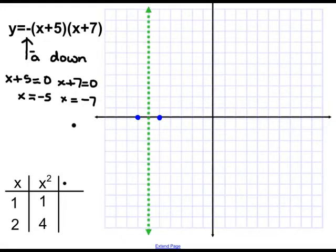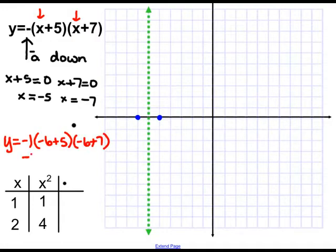Now, once we have done that, then what we would do is we would take that value and plug it back into our equation everywhere we see an x. So we're going to put a negative 6 in. So y is going to be equal to negative 1 times negative 6 plus 5, times negative 6 plus 7. So it's negative 1, negative 6 plus 5 is negative 1, negative 6 plus 7 is positive 1, and a negative 1 times negative 1 times a positive 1 is just 1. So that means that my vertex is at negative 6, 1.